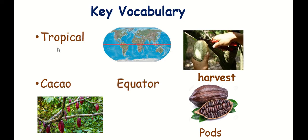Tropical — what does tropical mean? Tropical refers to the areas that are close to the equator. The equator is an imaginary line that divides the earth into two hemispheres, or two parts, as you can see with this red line.